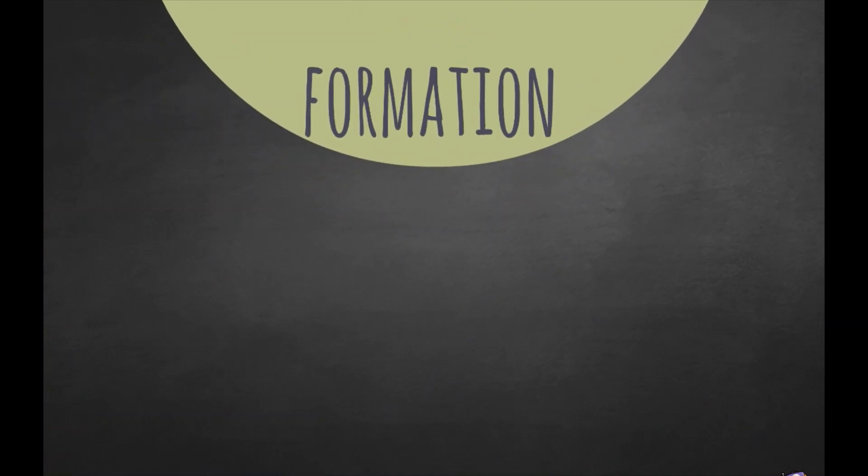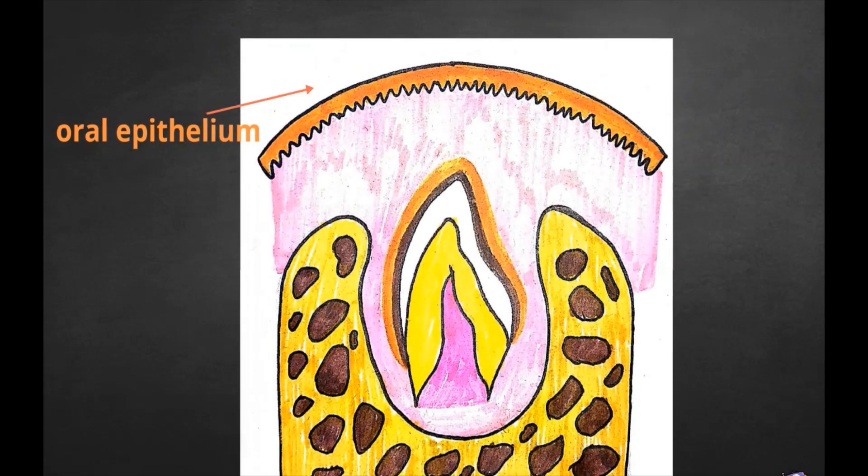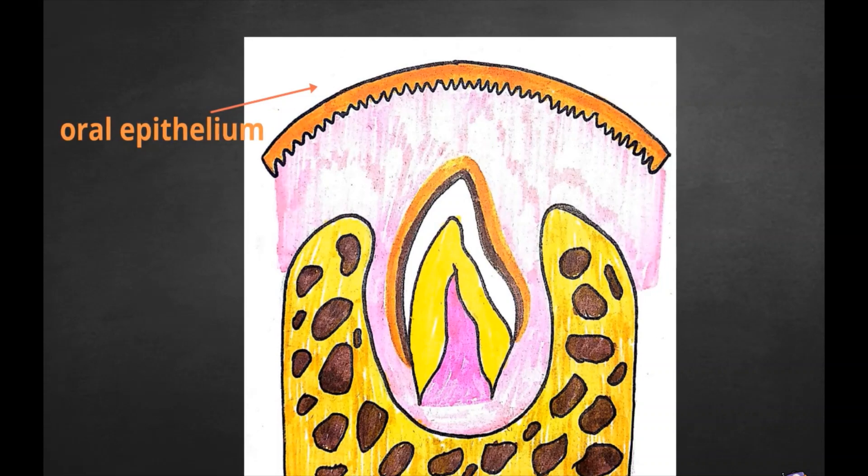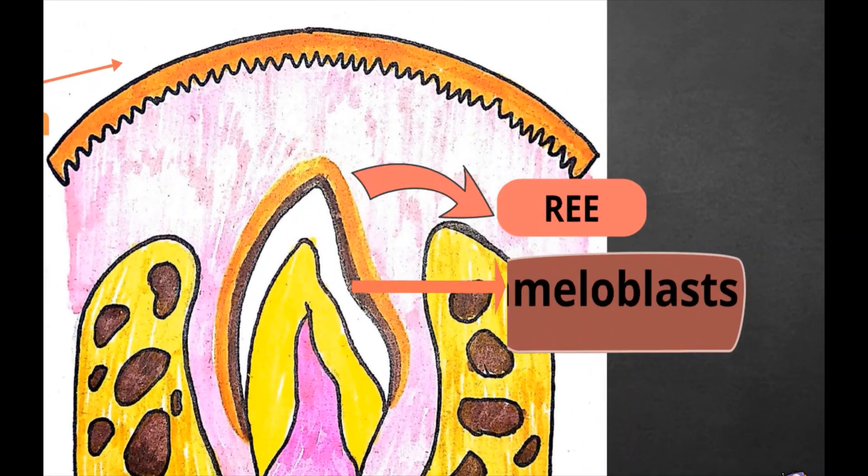Now we will look at the formation of junctional epithelium. We will explain it with the help of a few figures. In the first figure we can see that oral epithelium is marked as orange color. After enamel formation is complete, ameloblasts become reduced in height and they together with the cells of outer enamel epithelium form the reduced enamel epithelium.